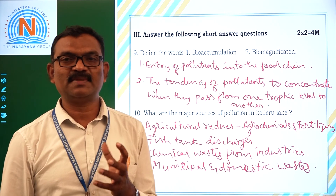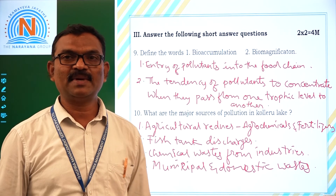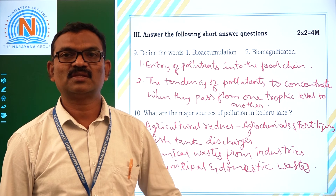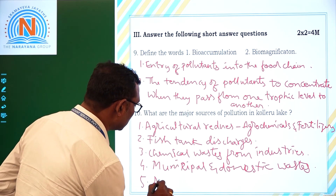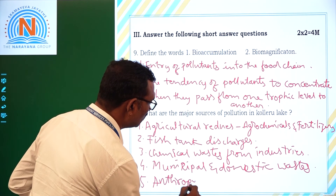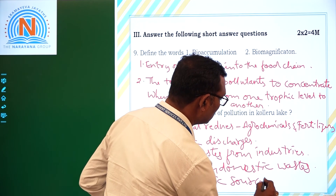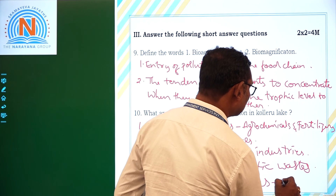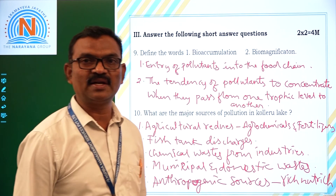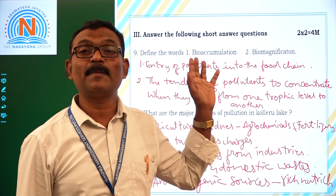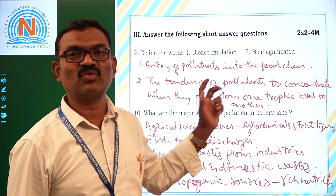Finally, there is extra addition of nutrients from anthropogenic sources — dead animals are thrown into the Collier Lake. When rich nutrients are available in the lake, waste plants like Icarnea and Pistia grow there, which again creates problems for aquatic organisms. This is how Collier Lake receives pollutants.